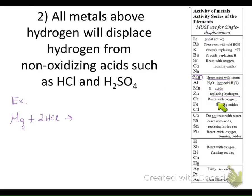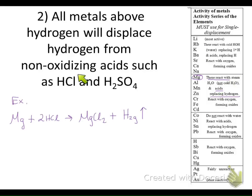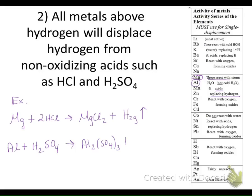The box is essentially telling you the answer. Magnesium reacts with acids and replaces the hydrogen, creating magnesium chloride and hydrogen gas. Anything in that box will react with acids replacing the hydrogen, and it will also react with steam water. Another example: aluminum reacts with sulfuric acid, kicking off the hydrogen to create aluminum sulfate and hydrogen gas.